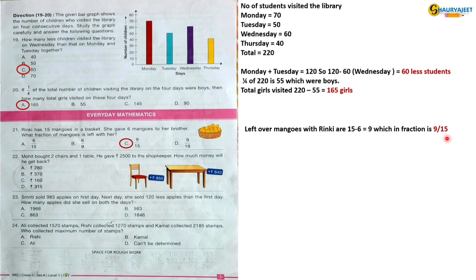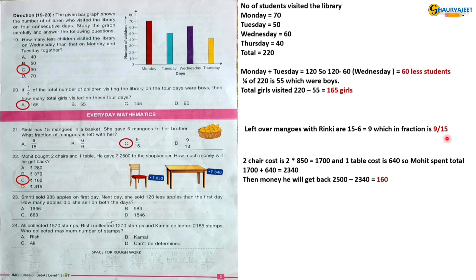Question 22: Mohit bought 2 chairs and 1 table. He gave rupees 2500 to the shopkeeper. How much money will he get back? 2 chair cost is 2 multiplied by 850 that is 1700, and 1 table cost is 640. So Mohit spent total 1700 plus 640 that is 2340. Then money he will get back: 2500 minus 2340, and that is 160. So the correct option is option C, Rs. 160.